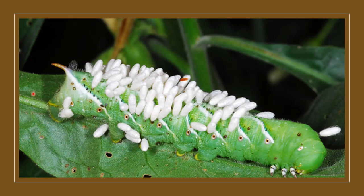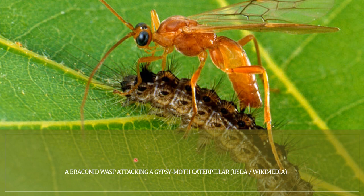Another example of a parasitoid is the interaction between a tobacco cornworm that has been killed by Cotesia larvae, which have pupated outside the host. We also have the braconid wasp attacking the gypsy moth caterpillar. The wasp is considered to be a parasitoid — it lays its eggs on the host, the caterpillar, and the larvae feed on its gut until they emerge after pupation as adults.